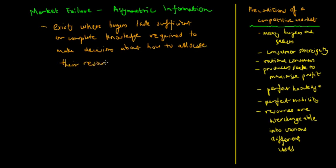That's a formal definition of asymmetric information. Coming back to the preconditions which have to be met for a competitive market to exist: many buyers and sellers, consumer sovereignty, rational consumers, producers seeking to maximize their profit, perfect knowledge, perfect mobility of resources, and resources are interchangeable into various different uses. These are the preconditions which must be met in order for a market to be competitive.